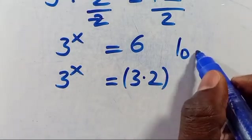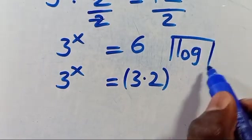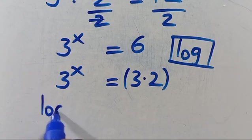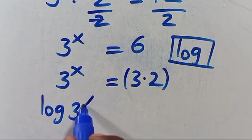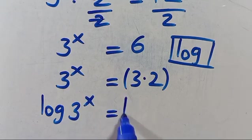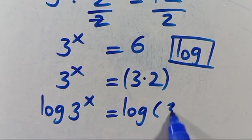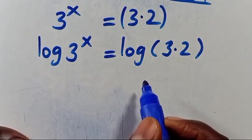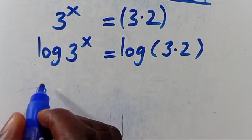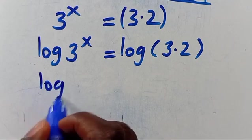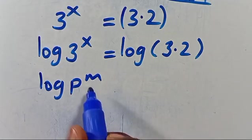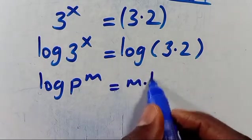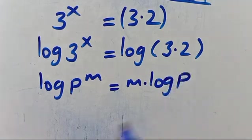Having established that, let's introduce log to both sides of this expression. So we are going to have log of 3 to the power of X equals log of (3 times 2). Note that when we have log P to the power of M, this power M will come down to give M multiplied by log P.